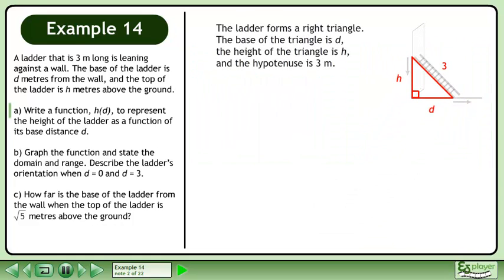The ladder forms a right triangle. The base of the triangle is d, the height of the triangle is h, and the hypotenuse is 3 meters.